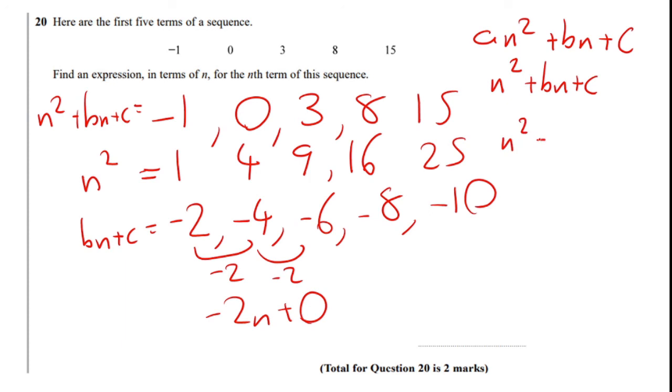So I've got the sequence, 1N squared minus 2N plus 0, which is N squared minus 2N. Now I'll just tell you there are other ways to work.